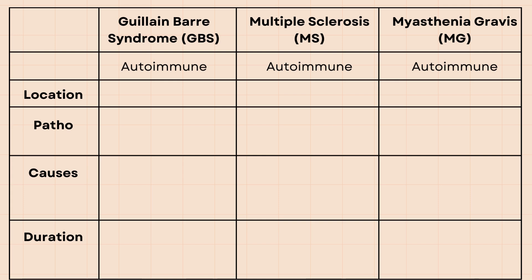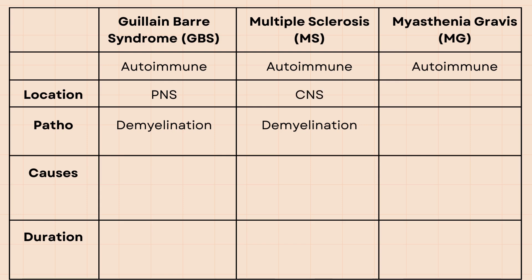GBS and multiple sclerosis both cause demyelination, in which the immune system attacks the myelin sheath, which is a protective sheath that covers nerve fibers of neurons. GBS causes demyelination in the peripheral nervous system while multiple sclerosis affects the central nervous system, and the demyelination in multiple sclerosis causes plaque formation that can be seen on imaging.